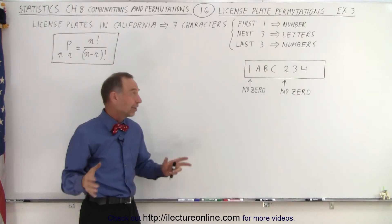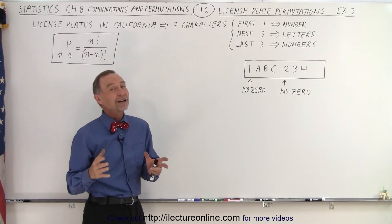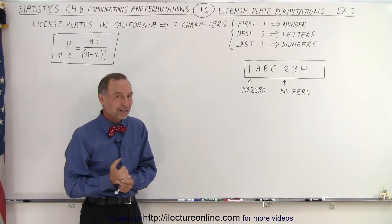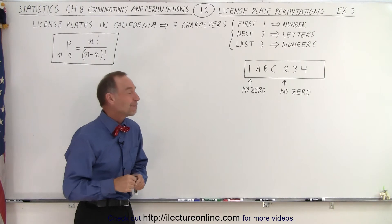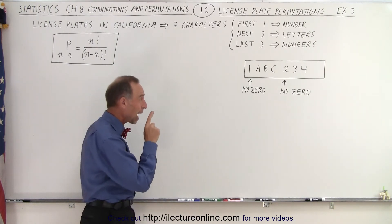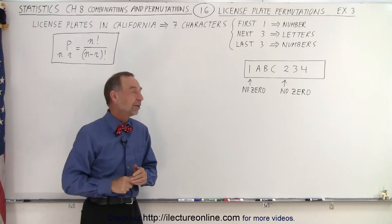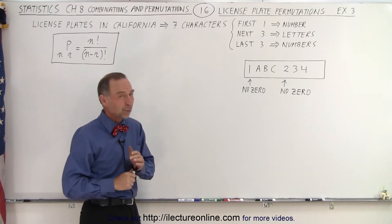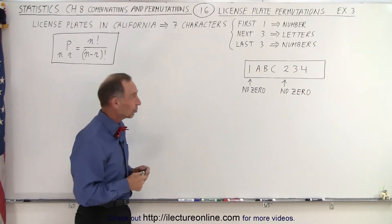It turns out this scheme was good for a long time, but we ran out of license plate permutations, and we had to go to a different scheme. We'll show you what that new scheme is. But let's first calculate how many different permutations there are with this kind of scheme, and why did we run out. Okay, let's try this.